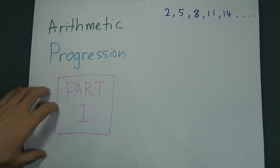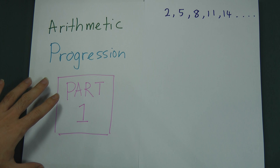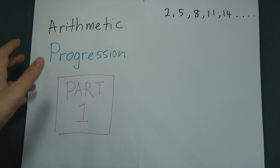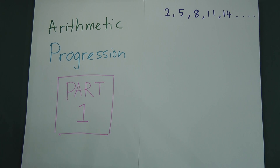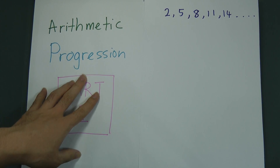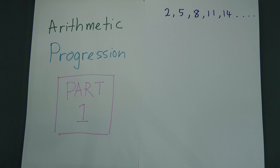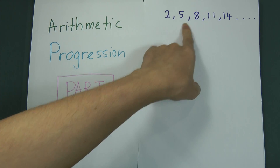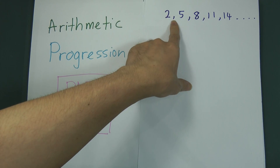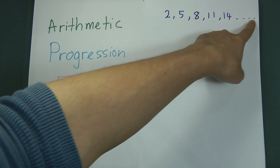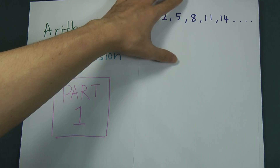Today I'm going to talk about Form 5 Mathematics, Chapter 1, which is the progression chapter. This is Part 1 for arithmetic progressions — an introductory video to guide you on what arithmetic progressions are. You will see a group of data here: the first number is 2, then 5, 8, 11, 14, and so on — the dot dot dot means the sequence continues.